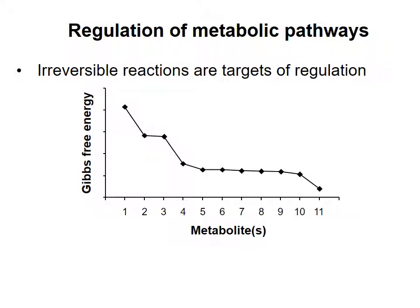In this video we have seen that irreversible reactions, or reactions that are far from equilibrium, are optimal points at which to control the flux through a metabolic pathway. Frequently, irreversible reactions are found as the first reaction in a pathway, or right after a branch point.